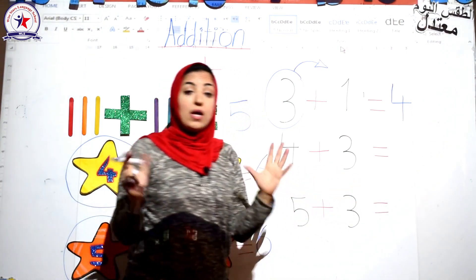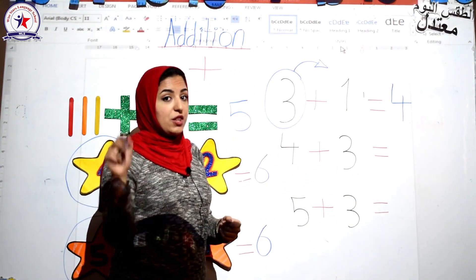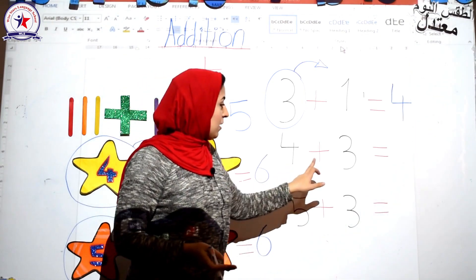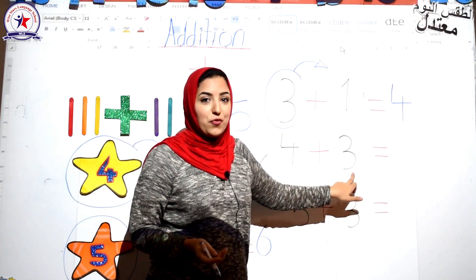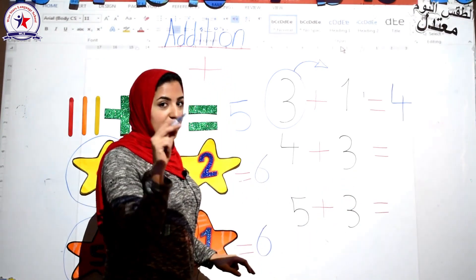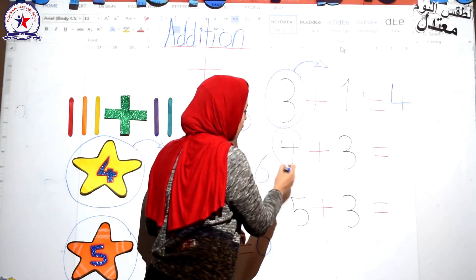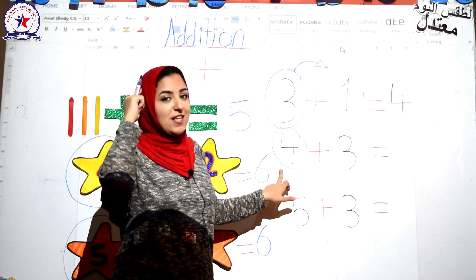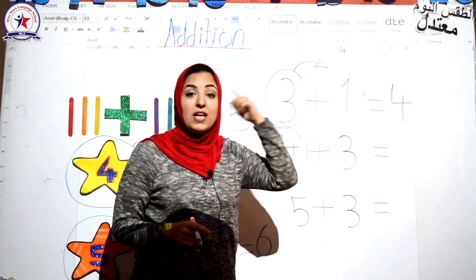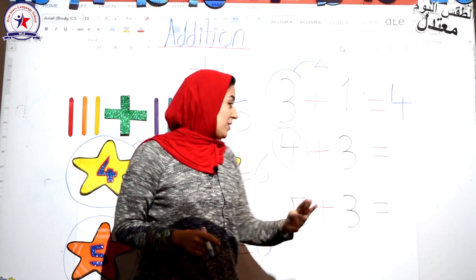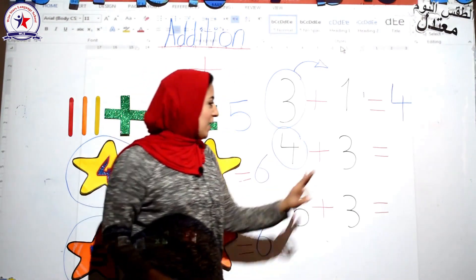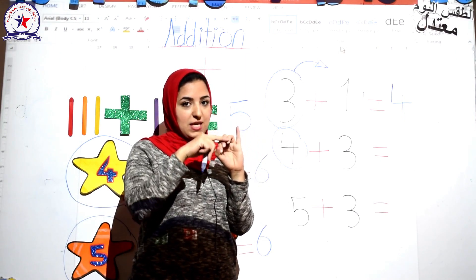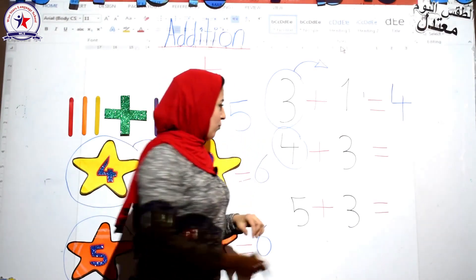Four plus three equal what? Circle the bigger number — circle number four. Put four in your head and put three on your fingers. Count after four: five, six, seven. Find seven.